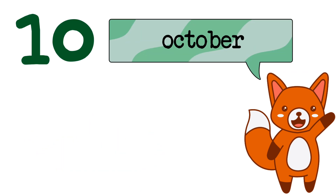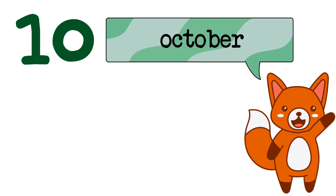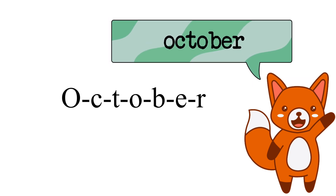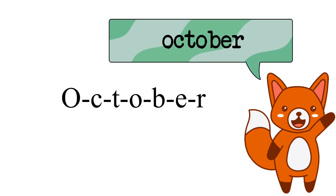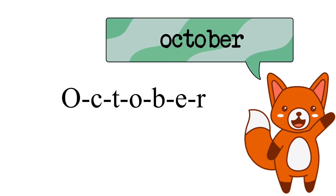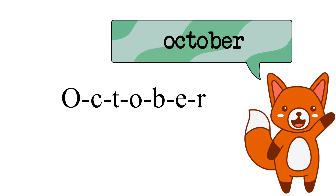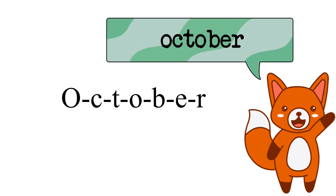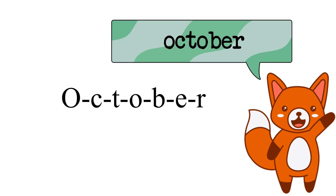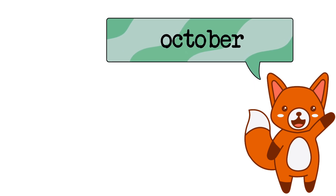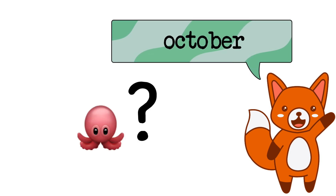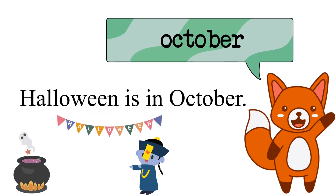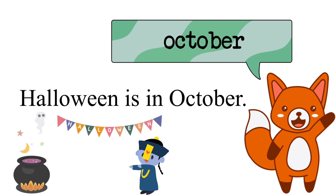The tenth month is October. O, C, T, O, B, E, R. October. Hey, doesn't October sound like an octopus? Halloween is in October.